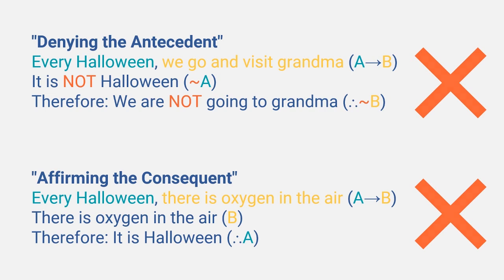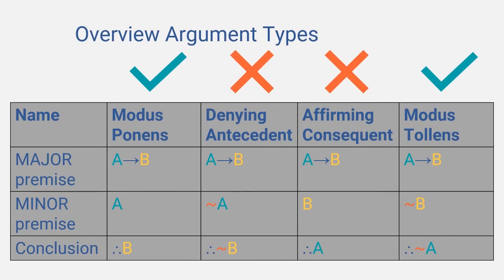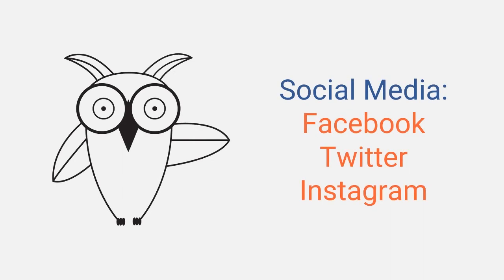So there you go. Modus ponens and modus tollens are valid, and denying the antecedent and affirming the consequent are invalid. But remember, the main challenge is not remembering those fancy names — it is to recognize the structure and logic of an argument, and then to use critical thinking to see if such an argument is valid. If you liked this video, do let me know and subscribe to my channel. For news and announcements, you can follow me on social media.